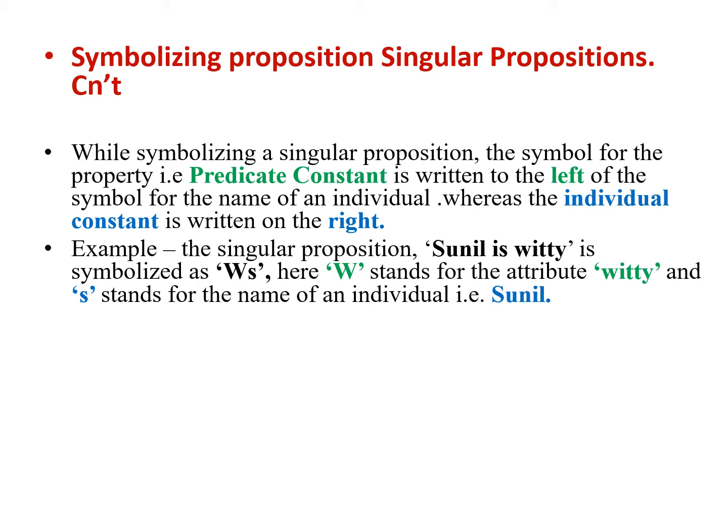Let us take an example to understand how to symbolize singular propositions. Suppose the given proposition is 'Sunil is witty.' We can symbolize it as capital W, small s. Here Sunil is the individual, so we use individual constant small s. Witty is the property, so we use capital letter W as the predicate constant. W is written on the left hand side and small s on the right, where W stands for witty and small s stands for Sunil.